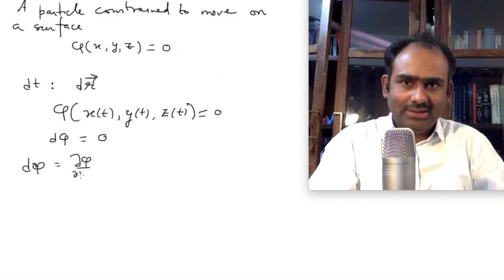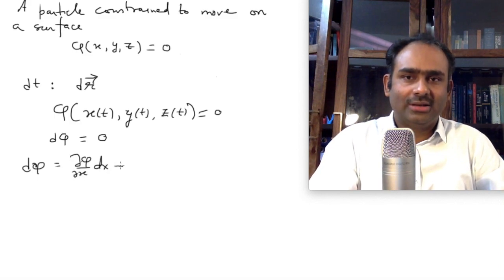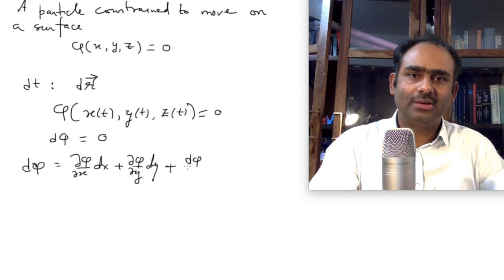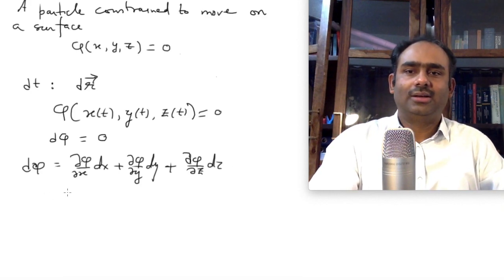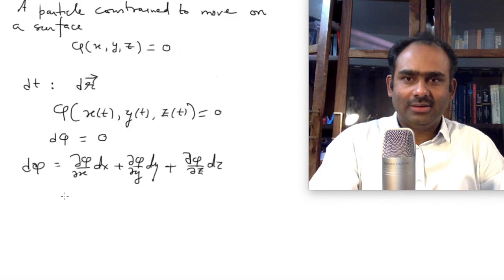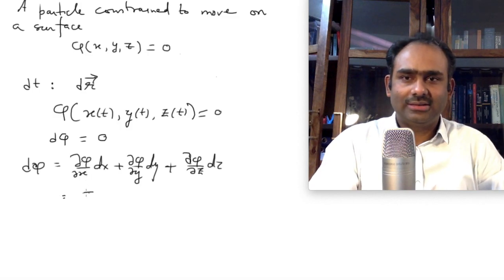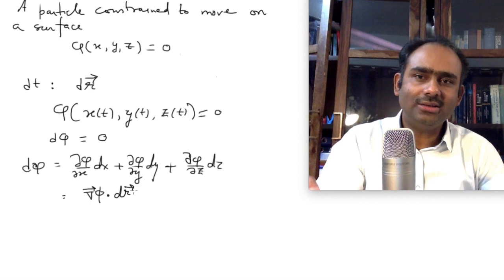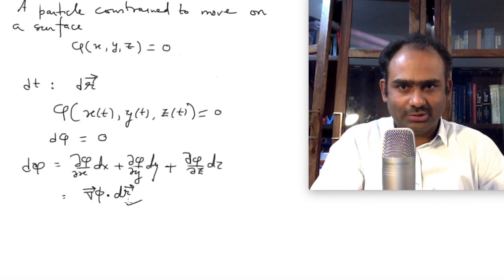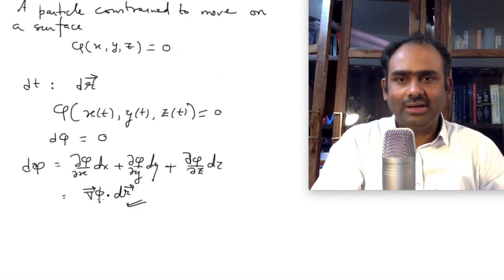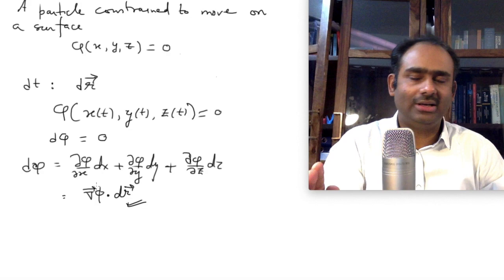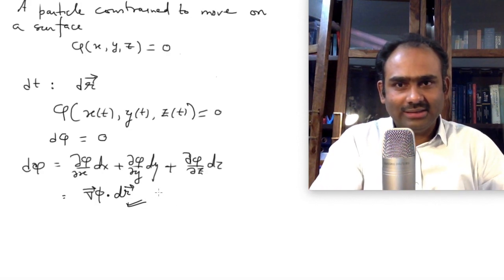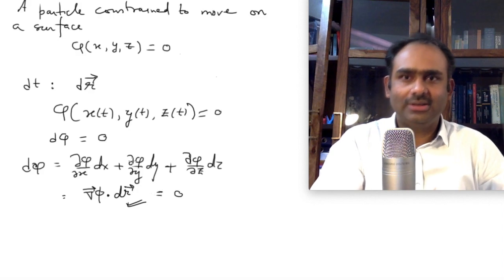We take the partial derivative of phi with respect to x times dx, plus partial derivative of phi with respect to y times dy, plus del-phi over del-z times dz, and this has to be 0. You can write this as gradient of phi dot dr, where the components of dr are dx, dy, dz, and the components of gradient of phi are del-phi/del-x, del-phi/del-y, del-phi/del-z. This entire thing equals 0.